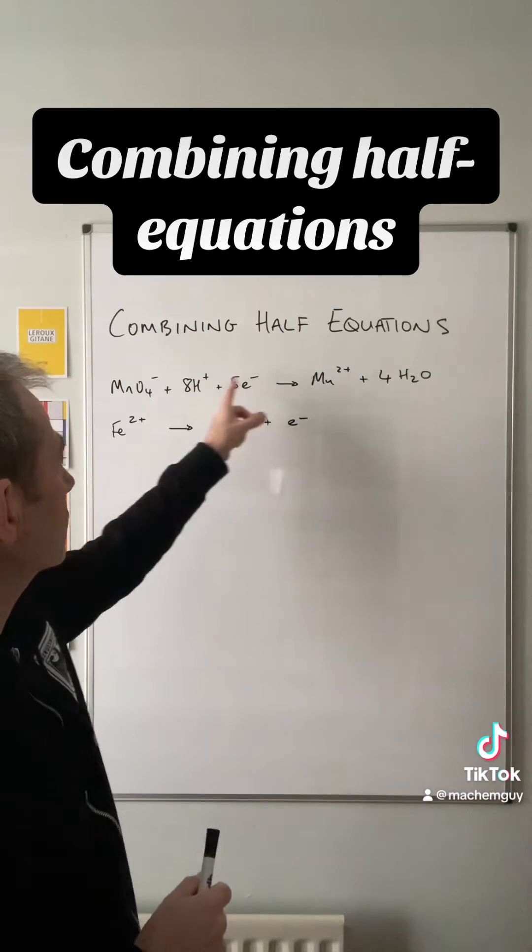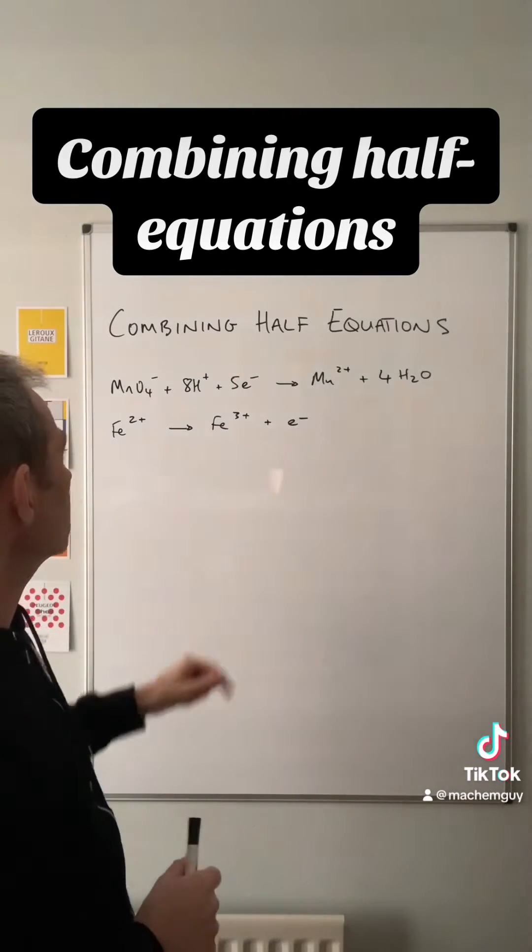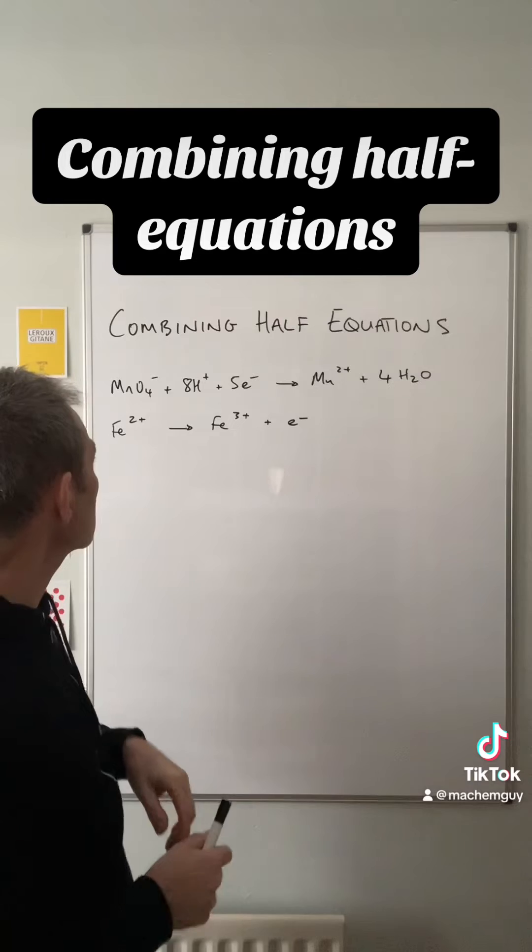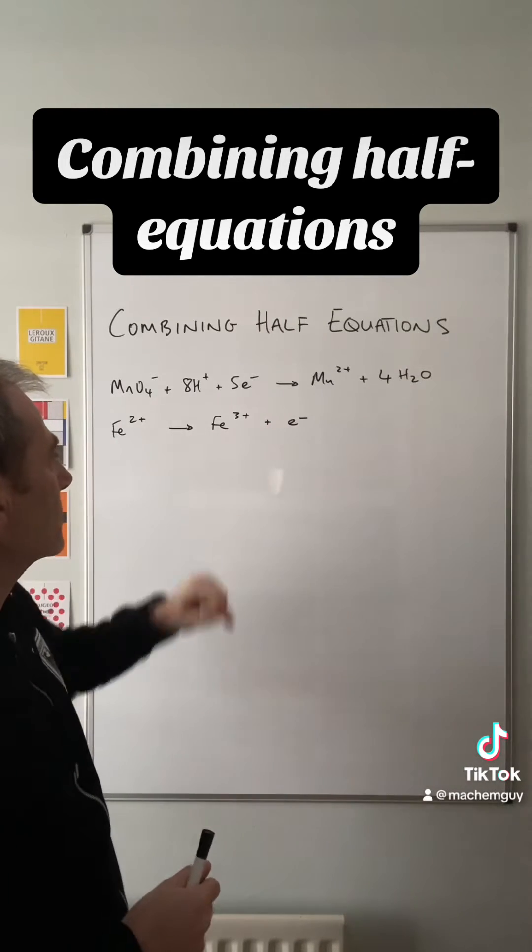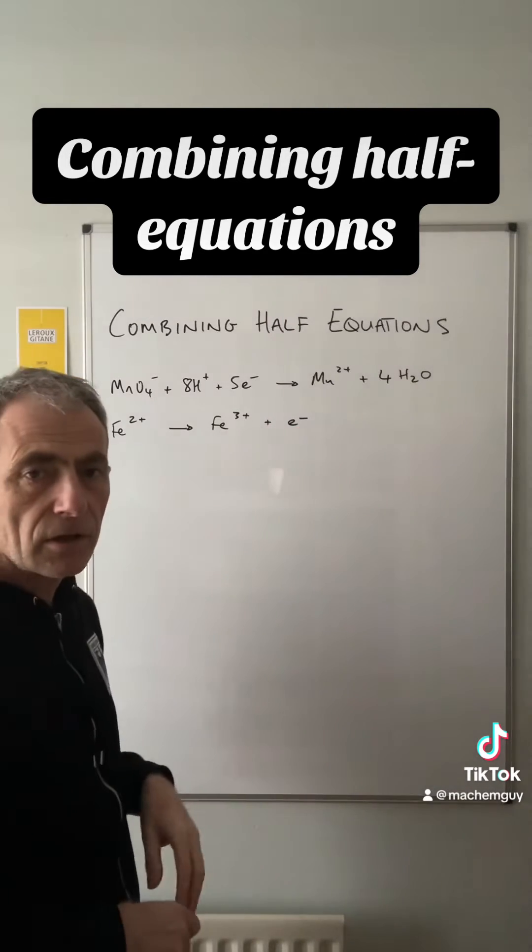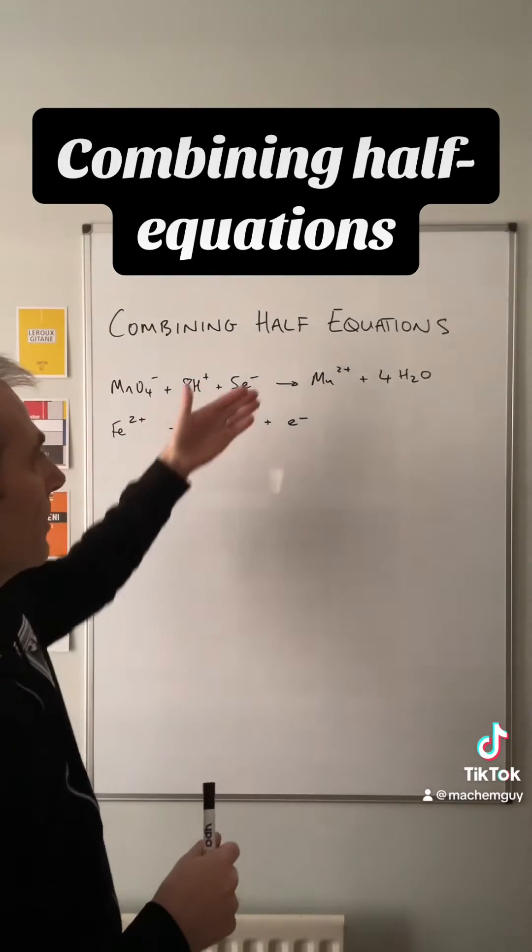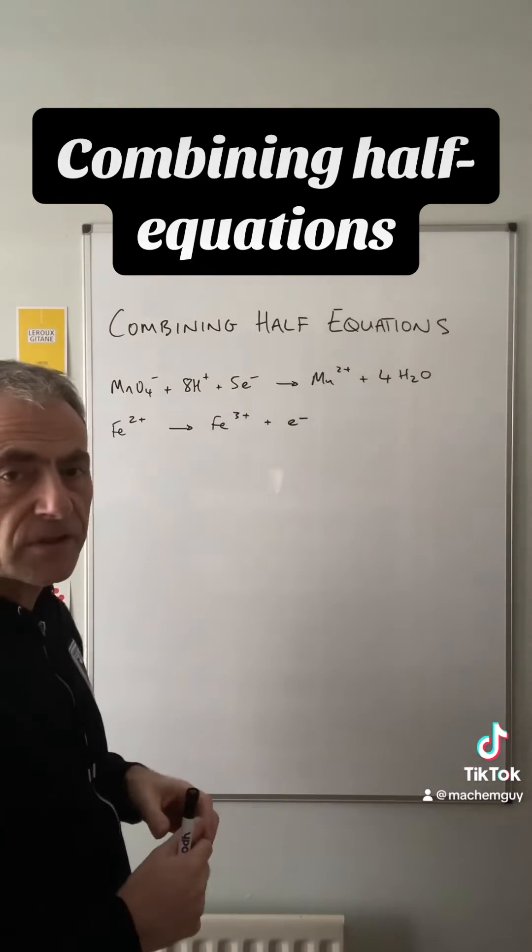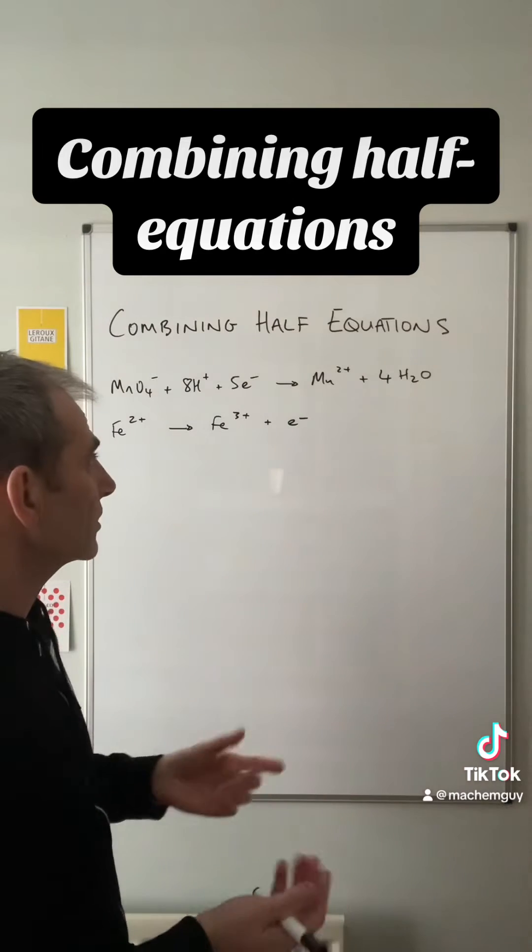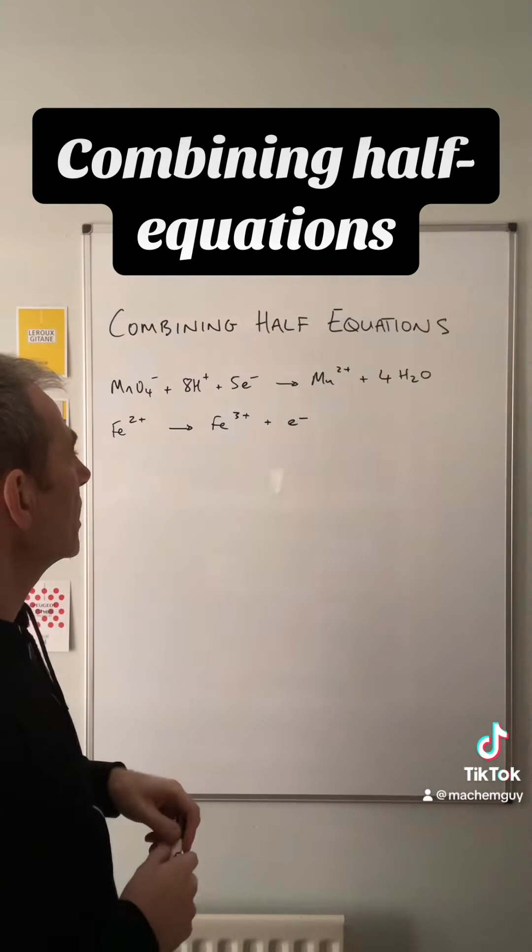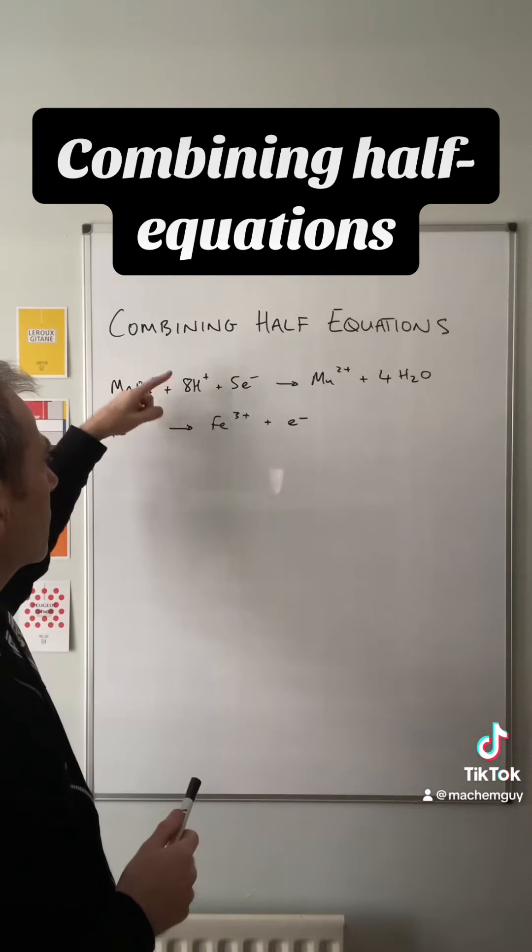We've got the reduction half in this top equation because it's gaining electrons, and we've got the oxidation half in this second equation because we're losing an electron. So if we want to combine these two half equations together to generate the redox reaction which involves both processes, we basically just need to add the two equations together.